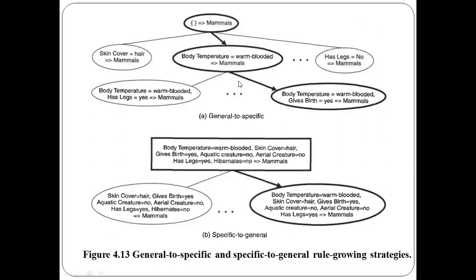To summarize the difference: in general-to-specific we start with an empty antecedent and at each step add rule conjuncts to grow the rules. In specific-to-general we start with one positive example covering all training records and in each subsequent step we remove one conjunct, resulting in a more general rule. We can use either strategy, but the rules must cover all training examples in the training set.